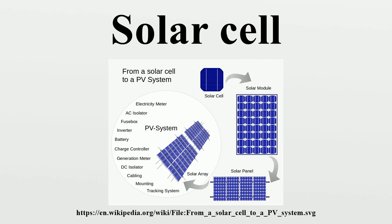The widespread introduction of flat-screen televisions in the late 1990s and early 2000s led to the wide availability of large, high-quality glass sheets to cover the panels. During the 1990s, polysilicon cells became increasingly popular. These cells offer less efficiency than their monosilicon counterparts, but they are grown in large vats that reduce cost. By the mid-2000s, poly was dominant in the low-cost panel market, but more recently mono returned to widespread use.